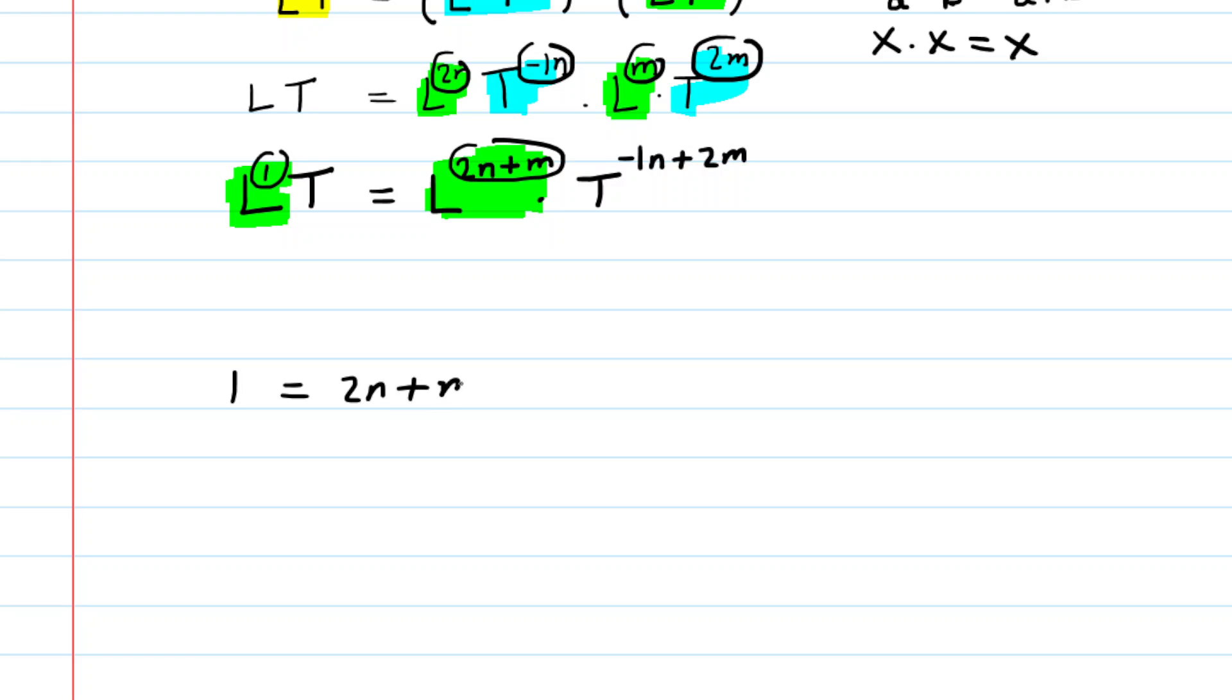And then similarly, with the t to the power of 1, in order for the equation to be true, that power of 1 has to be equal to the power on the right side, the negative 1n plus 2m. So we will set those powers equal to each other as well.